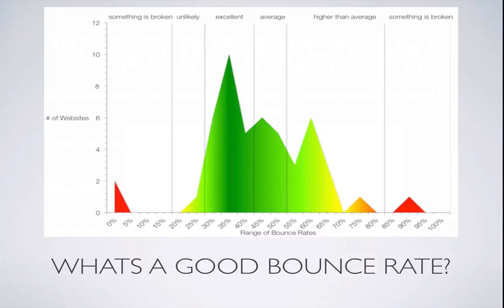If your bounce rate is high, Google won't rank you as well. So what is a good bounce rate? Anywhere between 26 to 40 percent is actually excellent — your website is doing great. A bounce rate between 41 to 55 percent is pretty average; most decent websites with good traffic fall in that range.